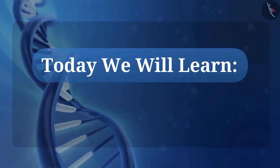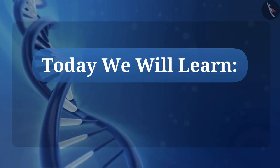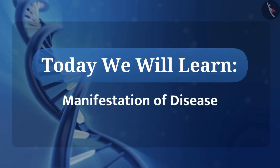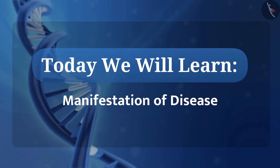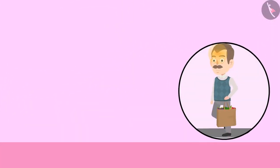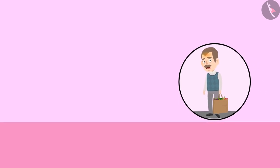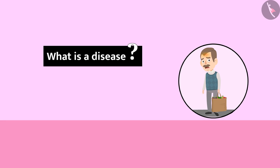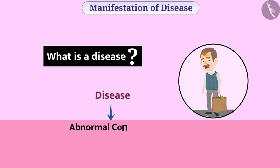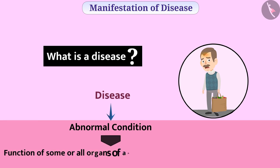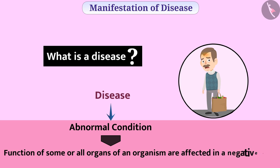Today we will learn about manifestation of disease. Due to disease, we are not able to do our work properly. Disease is an abnormal condition that affects the function of some or all organs of an organism in a negative way.